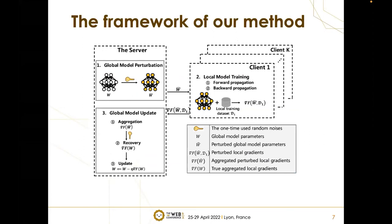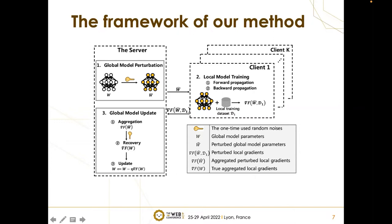For this purpose, we present an efficient accuracy-lossless perturbation method. The framework of our method includes three phases: global model perturbation, local model training, and global model update. First, the server selects secret numbers to mask the true global model and distributes it to all clients. Then each client performs local model training with local training data to get the perturbed local gradients. Finally, the server aggregates all local gradients and recovers the aggregation with the secret random numbers. Next, I will show the details of each phase.